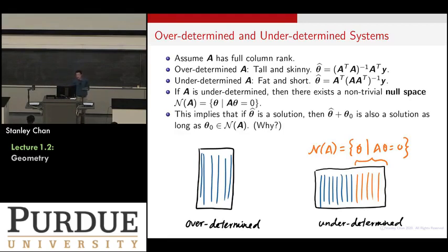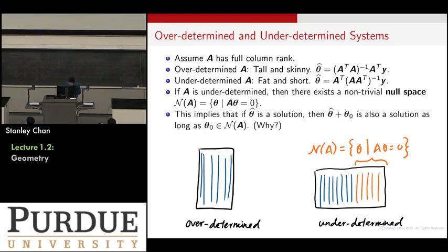If you have a null space, you run into the issue that there exists a set of thetas such that A theta = 0. This means that if theta-hat is a solution, then theta-hat plus theta-zero is also a solution — because A(theta-hat + theta-zero) = A theta-hat + A theta-zero = Y + 0 = Y. So given one Y, you can find infinitely many possible thetas, all of the form theta-hat plus some null vector theta-zero.